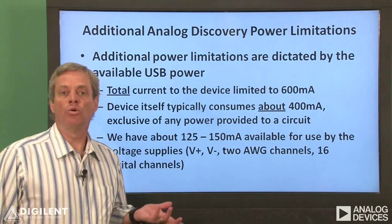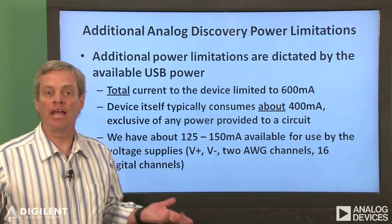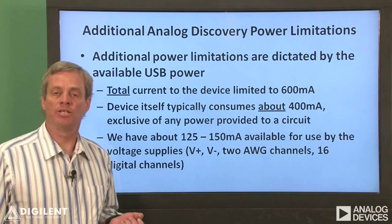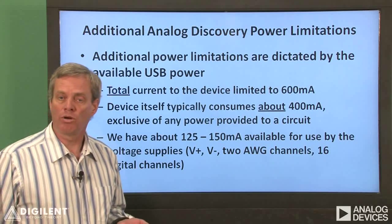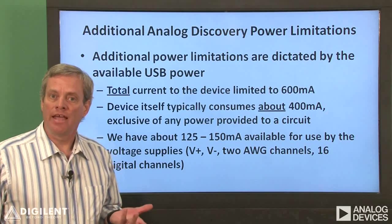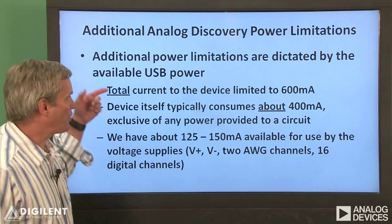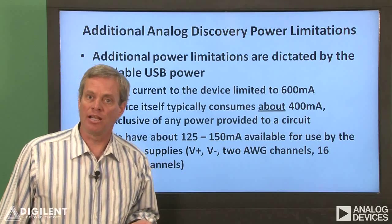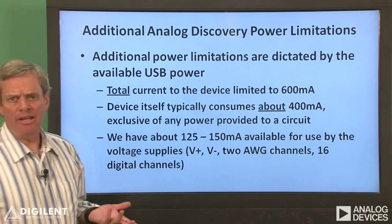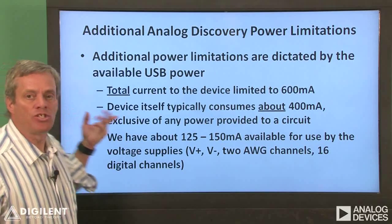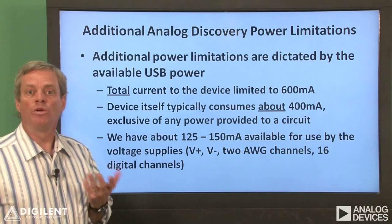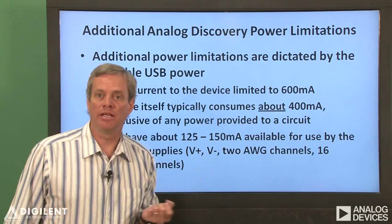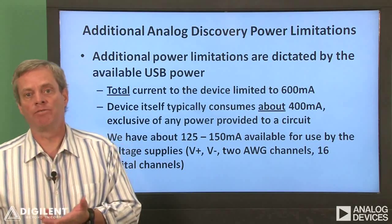The previous model is generally only accurate over some range of output currents for any power supply. The Analog Discovery, in particular, has a separate set of limitations on its voltage supplies to protect the USB port on your computer. The main limitation is that the total current delivered by the USB to the device must be less than 600 milliamps; exceeding this will shut down the device. Without any active instruments, the Analog Discovery consumes about 400 milliamps, so once instruments are active, you typically have about 125 to 150 milliamps left for your power supplies to deliver to an external circuit.